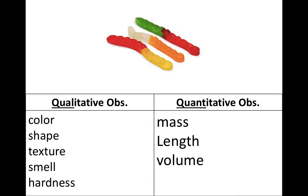So here we have some gummy worms, and we can think of some qualitative observations for each one of these things. The color would be, for the bottom one, red and yellow. The shape is a long, tubular shape. The texture would be kind of rubbery. The smell, depending on what the flavor is. This one maybe is made of cherry, and you would say it smells like cherries. And then the hardness, this one here would be fairly soft.